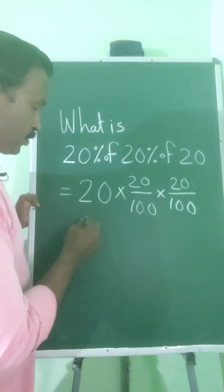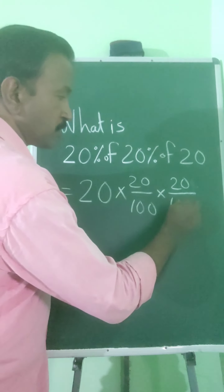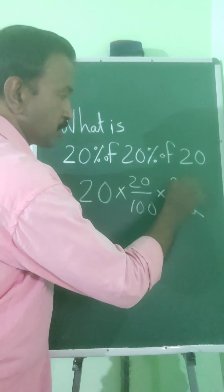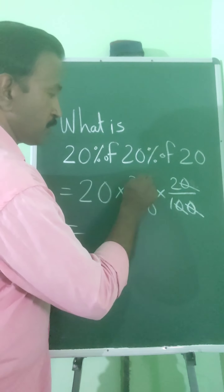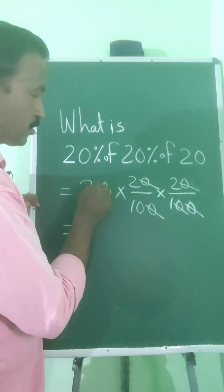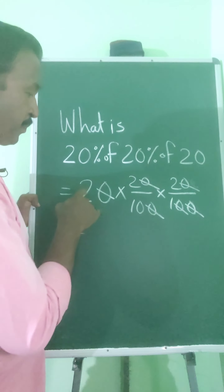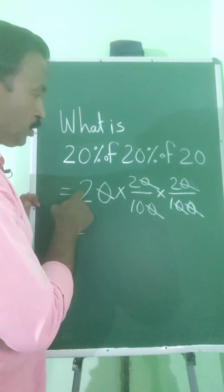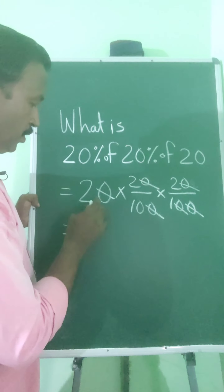That is equal to — now we cancel the zeros: 0, 0, 0, 0, 0 cancel. Now we have 2 into 2 into 2.